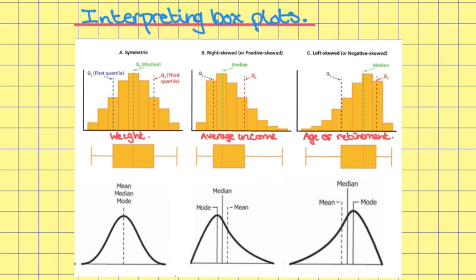In this video we're going to start looking at and interpreting box plots, but first I want to look at data distributions, their skewness and how this affects the shape of a box plot associated with the distribution. There are three main types of distribution: the first is symmetric or normal distribution, the second is right skewed or positively skewed distribution, and the third is left skewed or negatively skewed distribution.